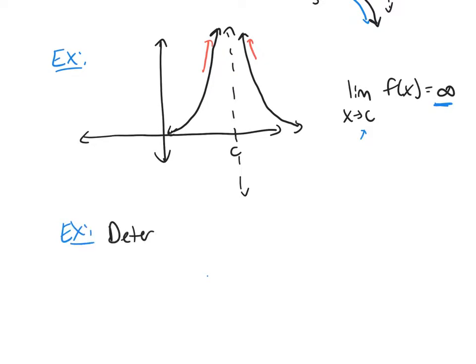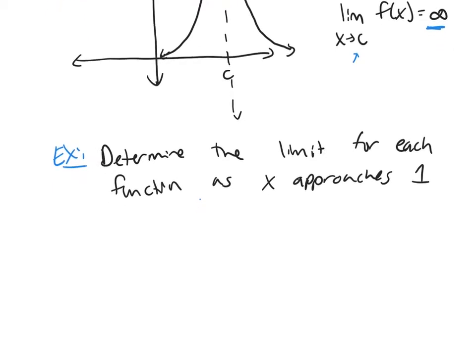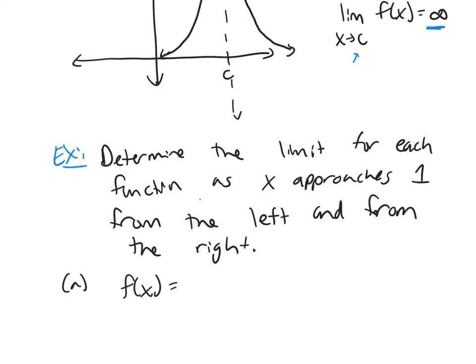So remember, I want you to determine the limit for each function as X approaches 1 from the left and from the right. So the first function we're going to look at is the function 1 over X minus 1 squared.